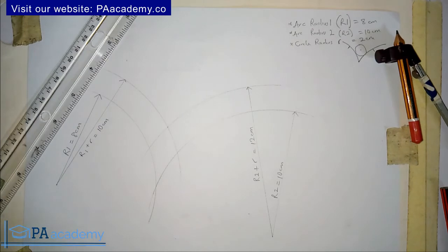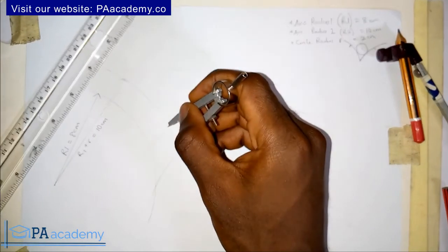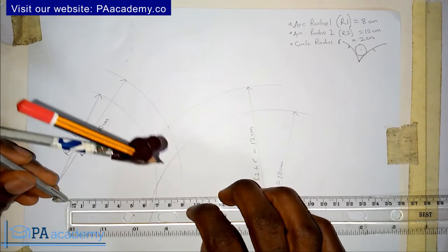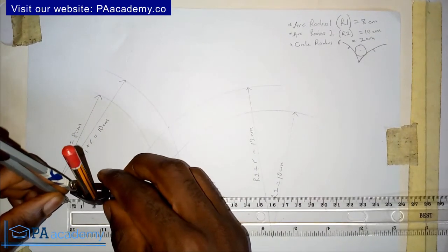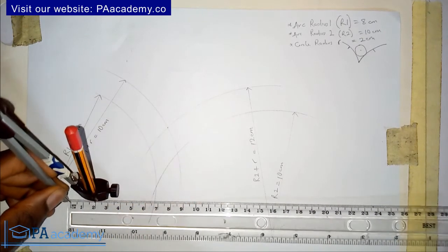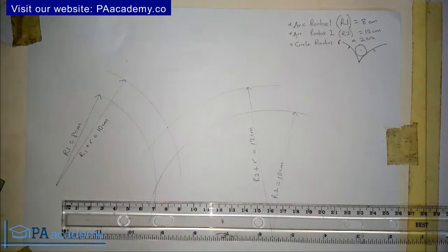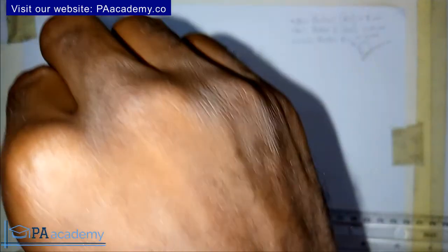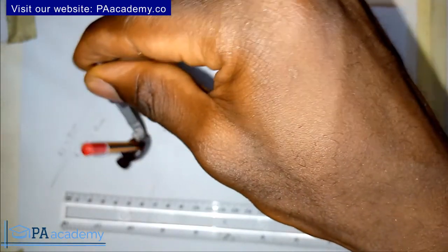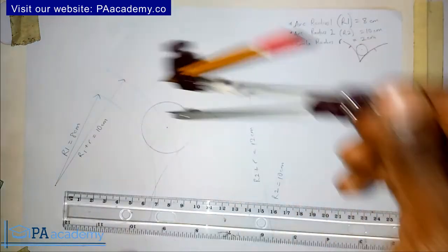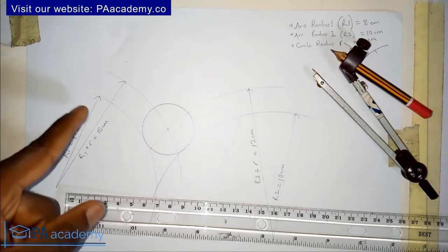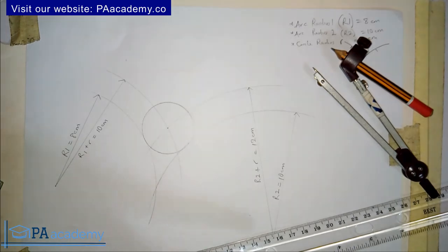Since we've found the center of the circle, now measure 2 centimeters — the radius of the circle we were asked to draw. Place the compass at the point of intersection and from that point draw the circle. Here it is — we already have our circle with a given radius of 2 centimeters, touching two arcs where we also know the radius of each arc.